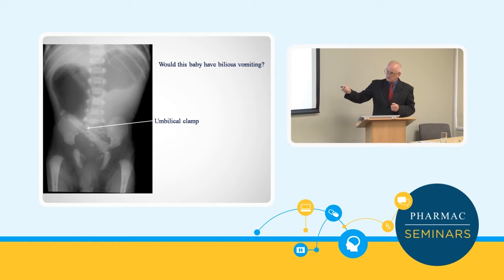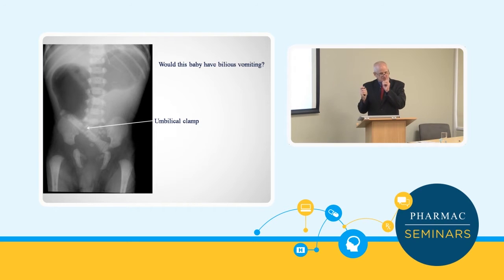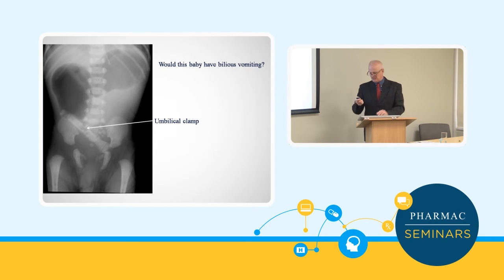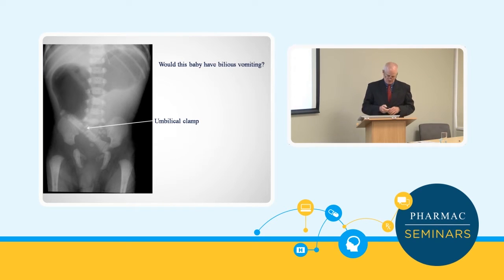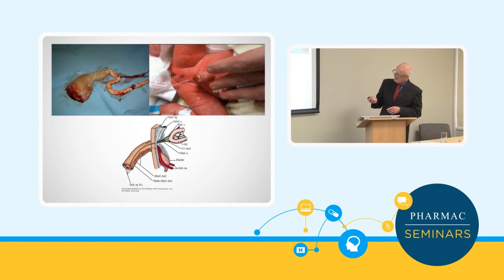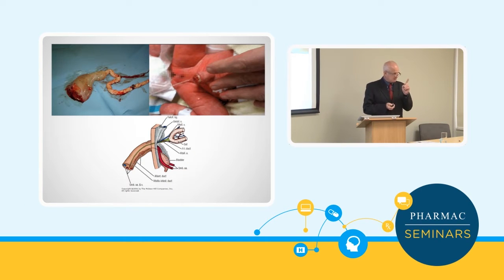Non-bilious vomiting is also a sign of bowel obstruction. The double-bubble X-ray picture is associated with duodenal atresia, which has a well-known chromosomal association — Down syndrome. This would also likely present with polyhydramnios. If the atresia is beyond the ampulla of Vater, the amniotic fluid may be dark-stained by bile.